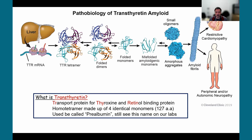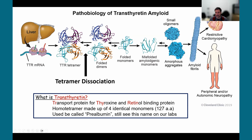Shifting to TTR — a completely different condition — the precursor protein is made by hepatocytes in the liver and is secreted into the blood as a tetramer (tetra meaning four). Each monomer is 127 amino acids, and they come together at a dimer-dimer interface. What happens is tetramer dissociation: the tetramer breaks down into individual monomers, which misfold and ultimately form amyloid that classically deposits in the heart, nerves, soft tissues, and ligaments.